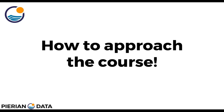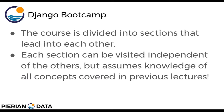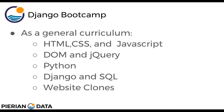Now let's talk about how to approach the course. This course is divided into sections that lead into each other. Each section can be visited independent of the others, but they also assume knowledge of all the concepts covered in previous lectures. As a high-level overview, we first talk about HTML, CSS, and JavaScript, then the document object model and jQuery — that's the front end half of the course. The second half discusses the Python programming language, Django and SQL, and then website clone projects.